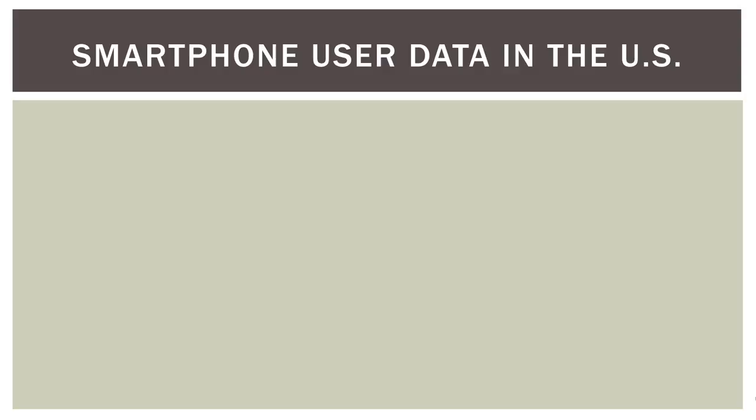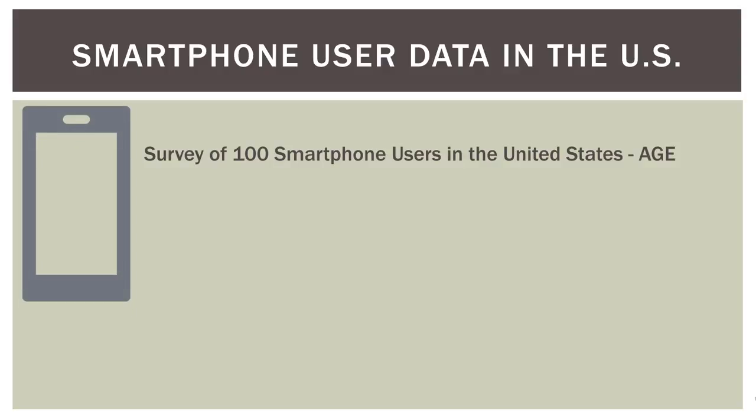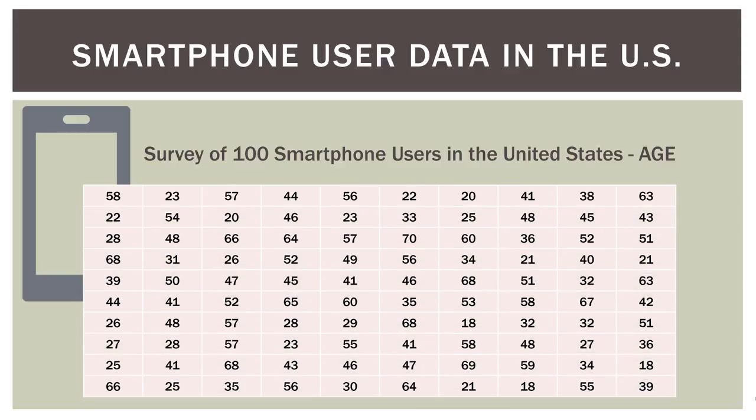In the last video, we talked about smartphone users here in the US, and we collected the manufacturing brand of that phone — Apple, Samsung, HTC, Motorola, and other. In this fictitious data, we also collected each user's age, which is a quantitative variable. So our first smartphone user was 58 years old, the next was 23, 57, 44, et cetera. We have the brand of the phone, which is a categorical variable, and we also have their age, which is a quantitative variable. So how do we represent this and make sense of all this data?